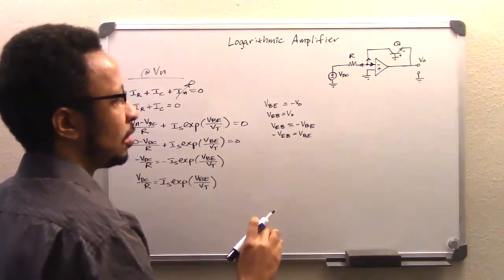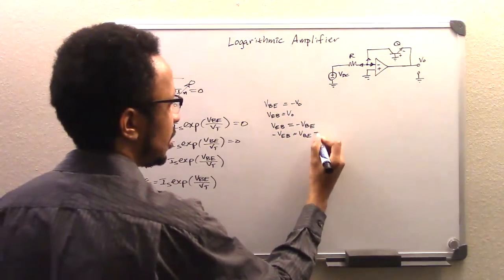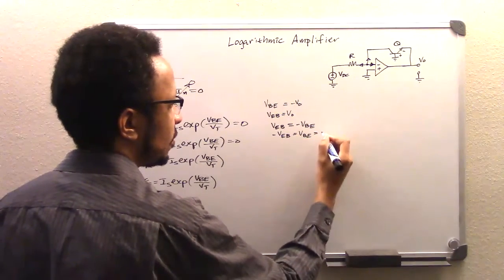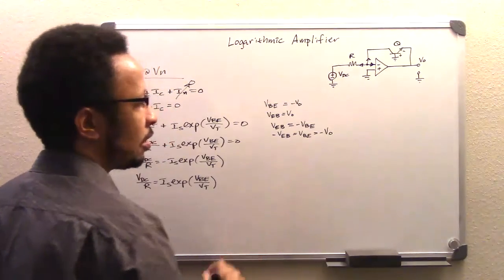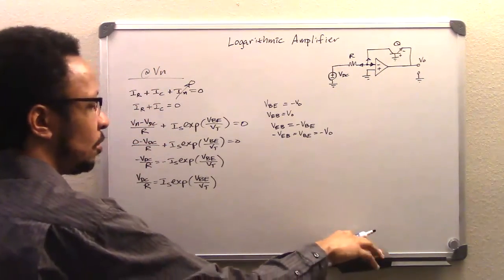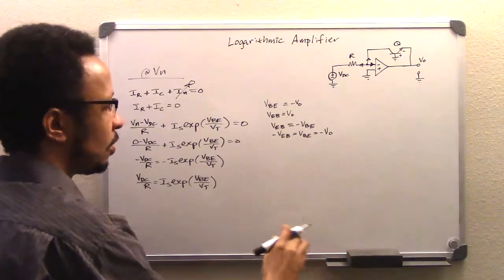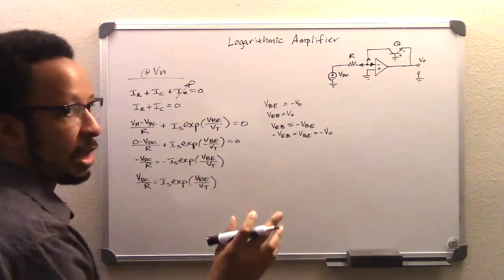So then that would tell us that negative VEB of course equals VBE. And by association, if VEB is Vout, then it has to be equal to, Vout has to be set equal to a negative, which would be negative Vout. So what we're going to do here is we're going to substitute for VBE, we're going to substitute in negative Vout.